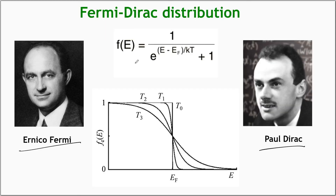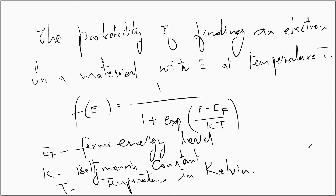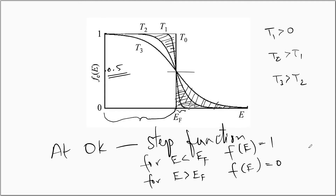In this video, we have seen what Fermi-Dirac distribution is. This distribution or statistics is proposed by Enrico Fermi and Paul Dirac. It is also popularly known as Fermi function, Fermi distribution function, Fermi-Dirac distribution, Fermi-Dirac statistics, or Fermi statistics. The probability of finding an electron in a material with energy E at temperature T is given by F(E) = 1 / (1 + exp((E − E_F) / kT)), where E_F is the Fermi energy level and k is the Boltzmann constant, T is temperature in Kelvin.